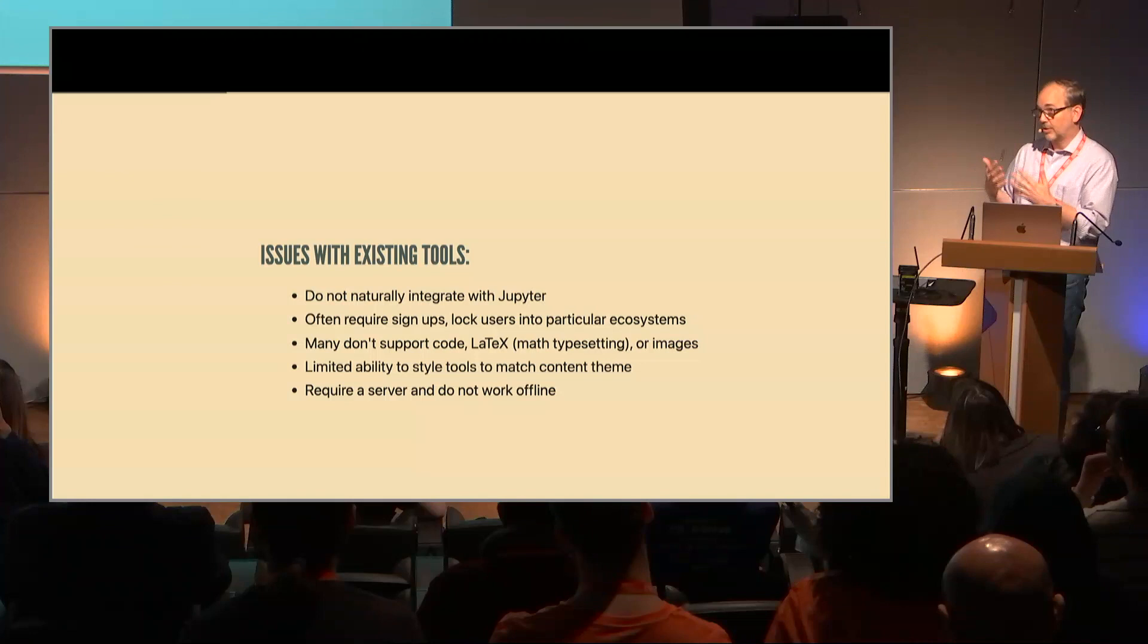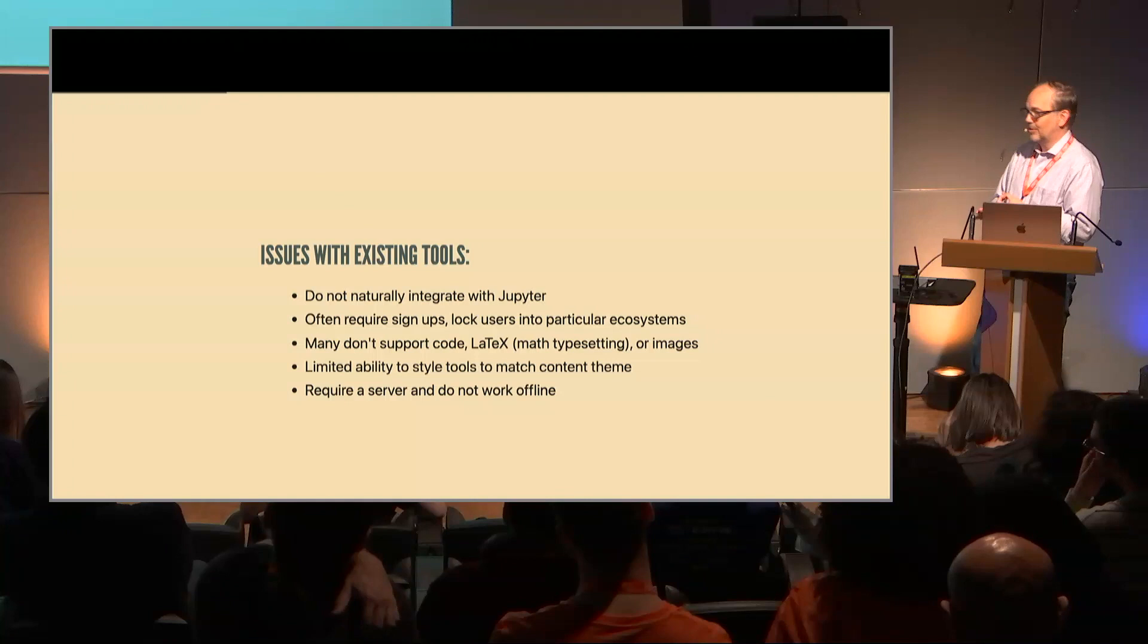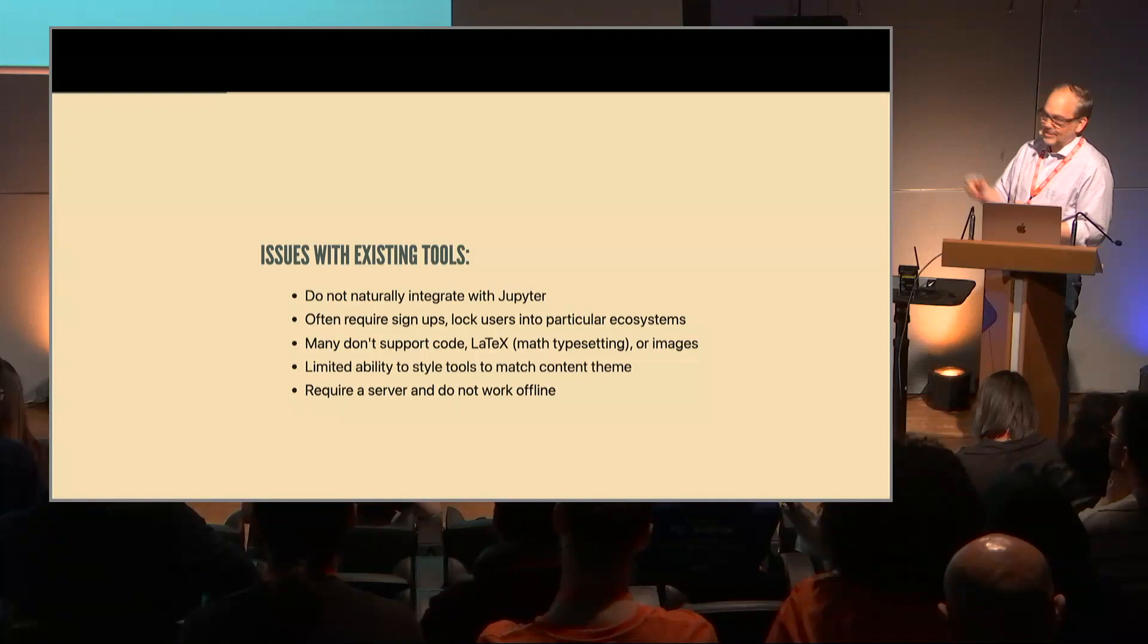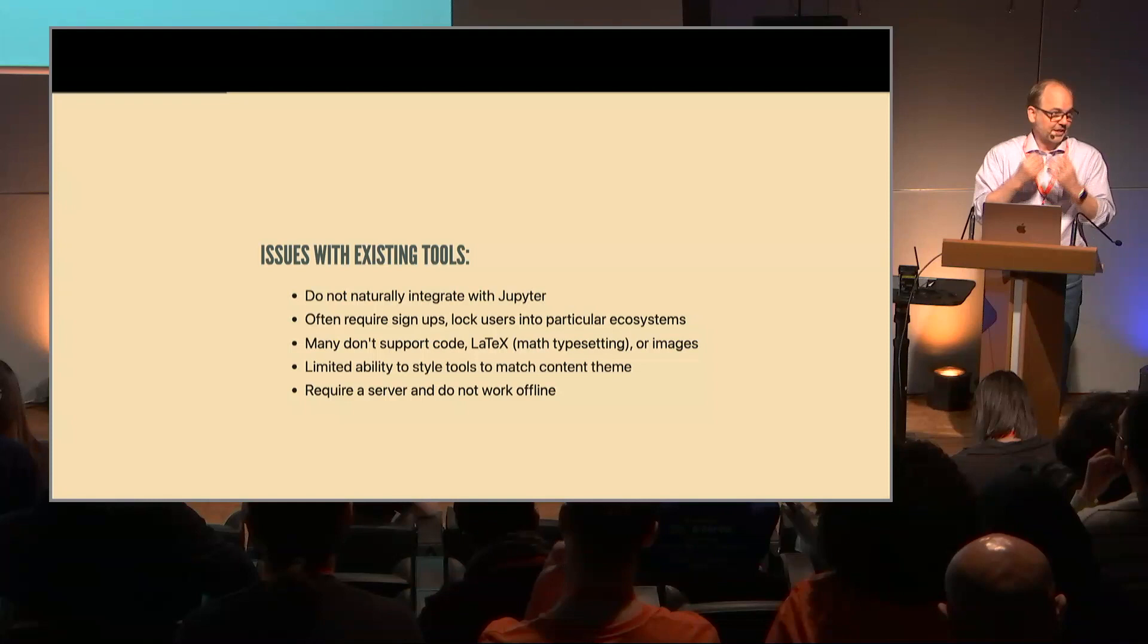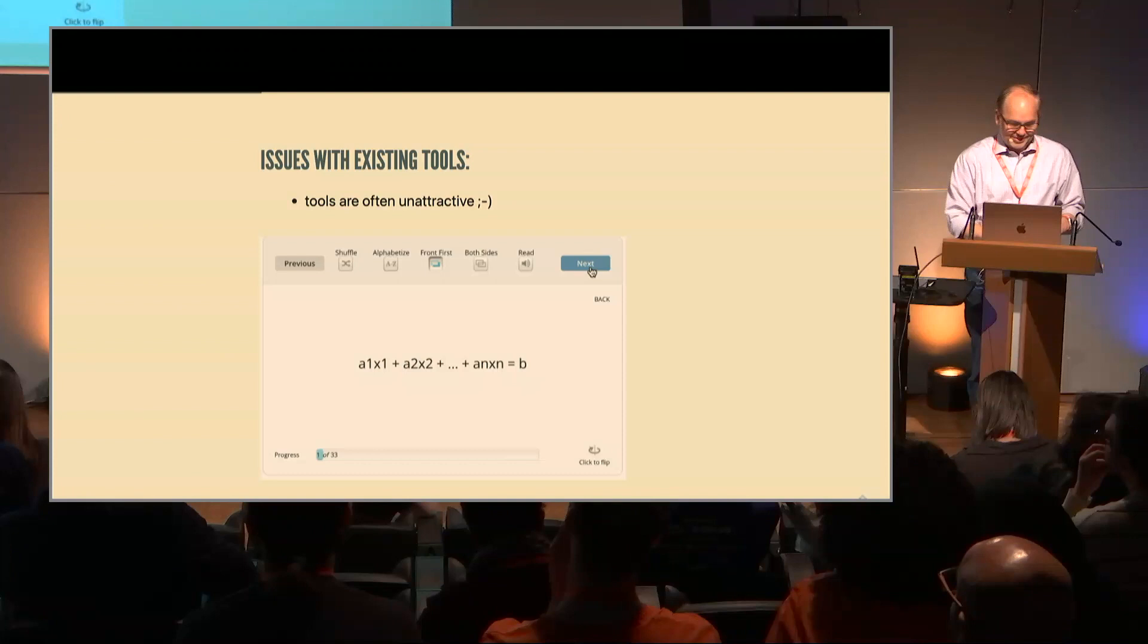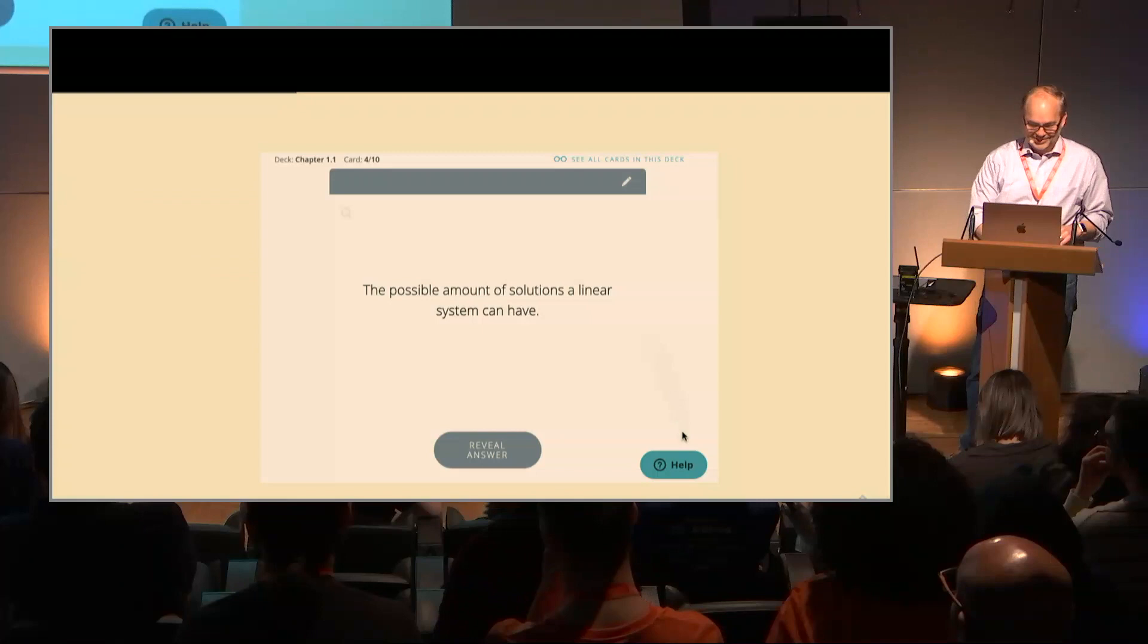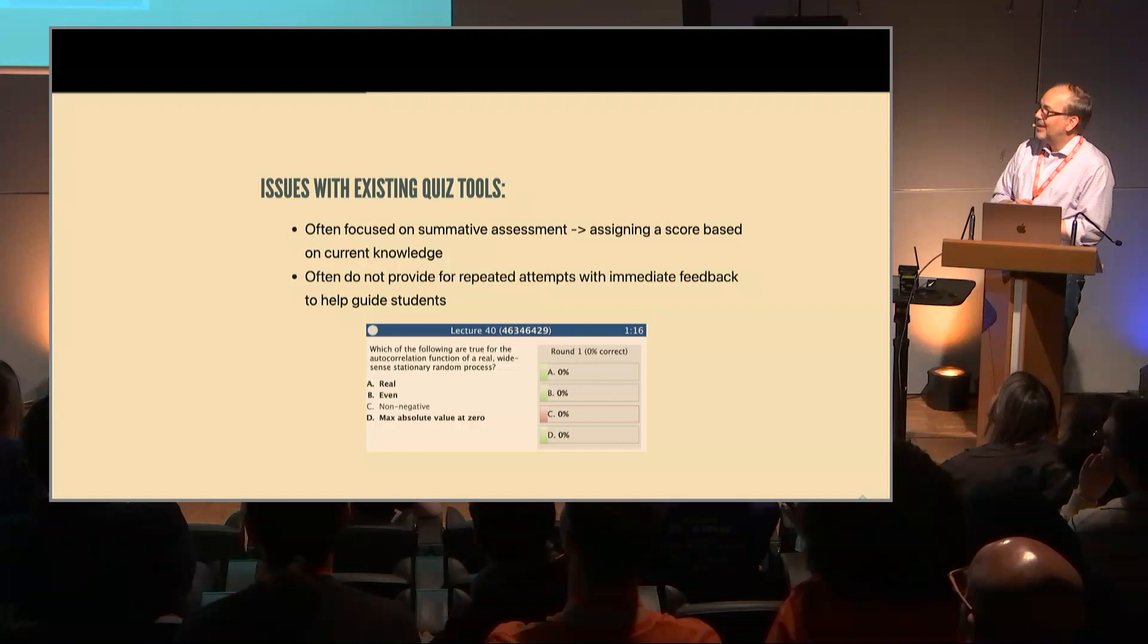I looked at how can I incorporate all sorts of things like this to achieve these goals, and a lot of things didn't achieve the goals. For instance, I didn't have some natural way to integrate with Jupyter or particularly Jupyter Books. You had locked users into particular ecosystems, didn't support either code or LaTeX, which is important to me because I teach mathematical courses, or images. And most of them require some server and wouldn't work in an offline mode, and to me it's important that students be able to take something and it continue to work whether they're connected or not connected.